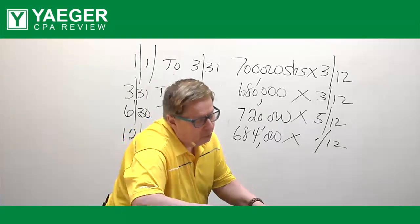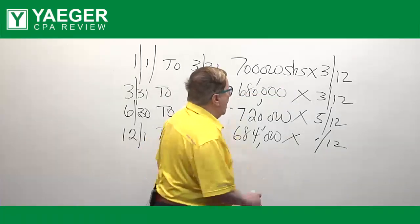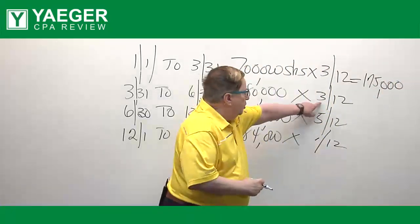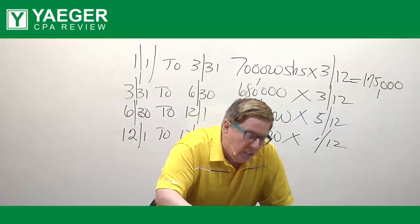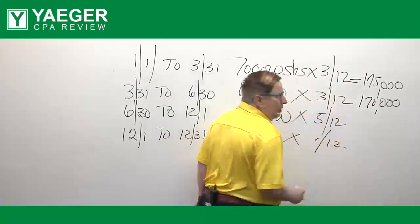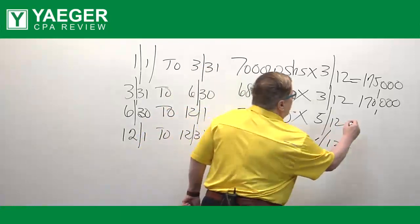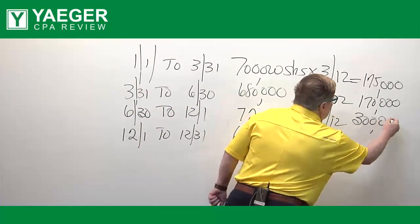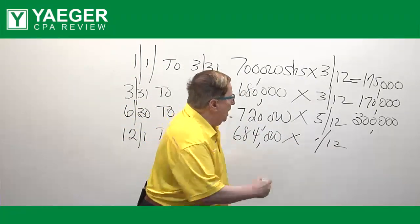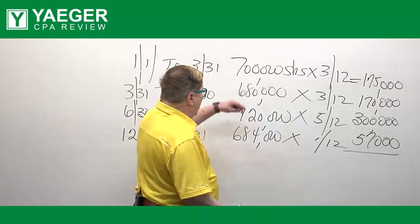When we multiply the first one, we're going to get 700,000 shares times 3/12, which gives us 175,000 shares. When we multiply 3/12 times the 680,000 shares, we get a weighted average of 170,000 shares. And then when we multiply 720 by 5/12, we get 300,000 shares. These are all the weighted average shares. And then when we multiply 1/12 times 684,000 shares, we'll get 57,000 shares. These are the total weighted average of each time period.